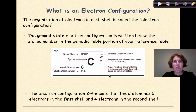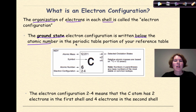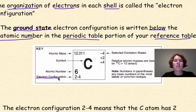So first things first, what is an electron configuration? You can think of an electron configuration as being the organization of electrons in each shell. The ground state electron configuration is written below the atomic number on the periodic table portion of your reference table. That 2-4 that you see right here is the electron configuration for carbon.